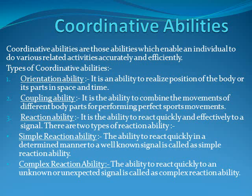Types of coordinated ability. Orientation ability: it is the ability to realize the position of the body or its parts in space and time. Coupling ability: it is the ability to combine movements of the different body parts for performing a perfect sports movement.